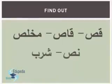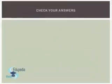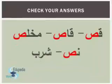Find out Sa in the following words. Once you're done, you can carry on. We have Sa in Qas, Qas, Makhlis, and Nas — but not in Shariba.